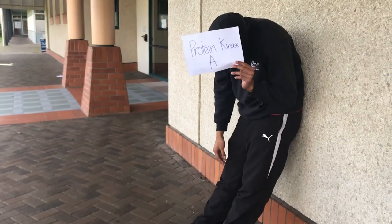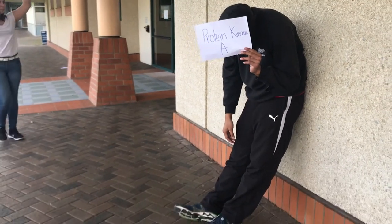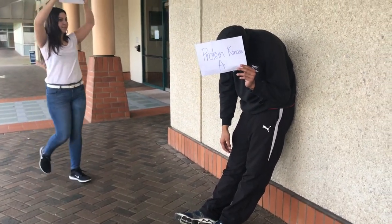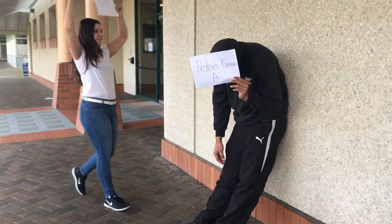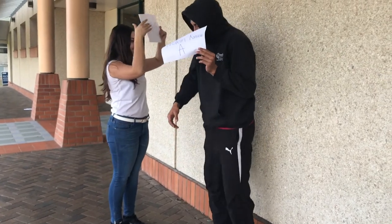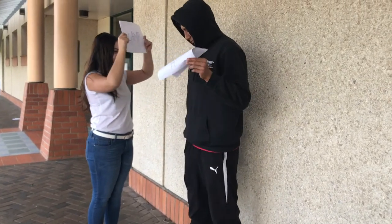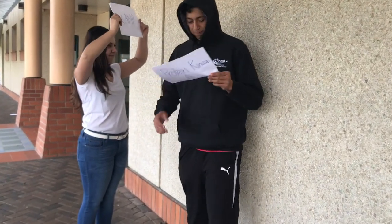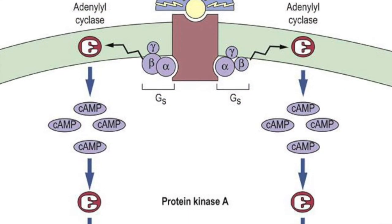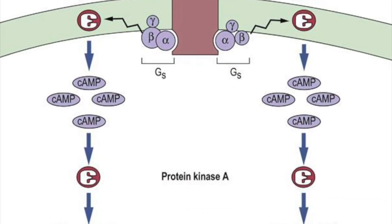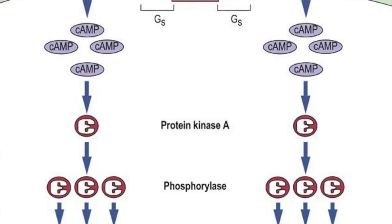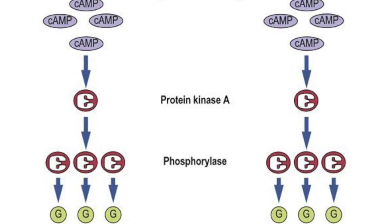cAMP finds protein kinase A in its inactive state and then activates it. This overall process is repeated as many ATP molecules are converted into cAMP, and each cAMP messenger activates a protein kinase A.